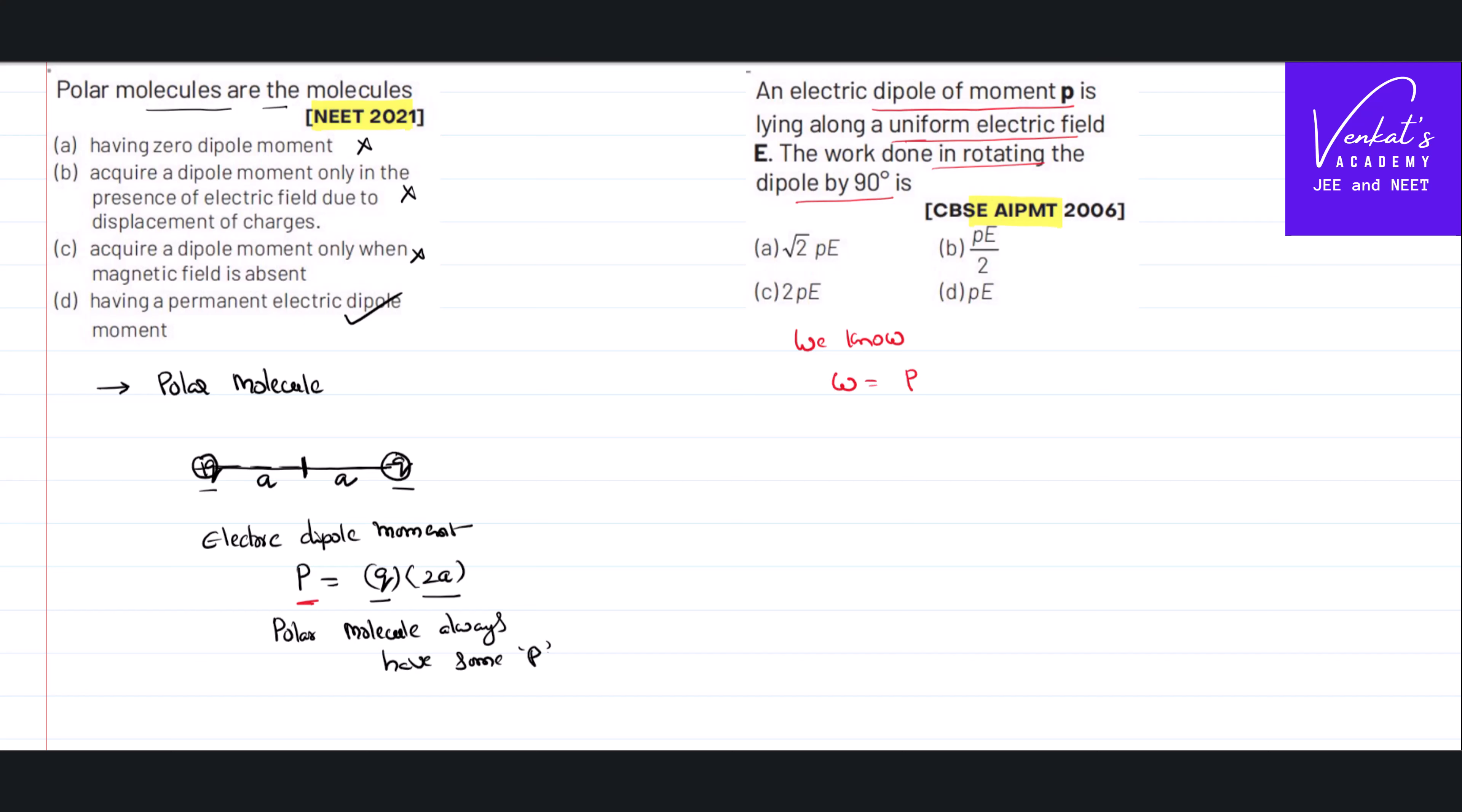PE(cos θ₁ - cos θ₂), where θ₁ is from which angle to which other angle it is rotated in the electric field. The dipole is rotated in the electric field. It was initially said it is lying along the field, that means it is initially having zero angle. Work done in rotating by...